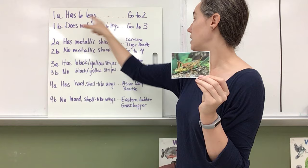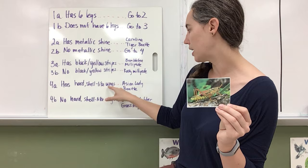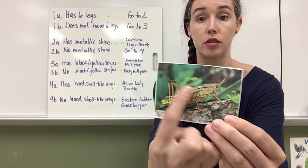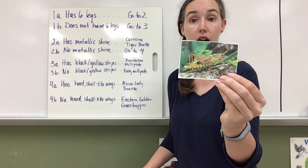All right, what about this guy right here? Have six legs? Yes. Go to two. Has a metallic shine or no metallic shine? No metallic shine. So I'm going to go to four. Has hard shell-like wings? No. This one barely has wings at all. They're like short and stubby. Has no hard shell-like wings. Eastern lubber grasshopper. So this key works. I would do this for all my organisms just to be sure.